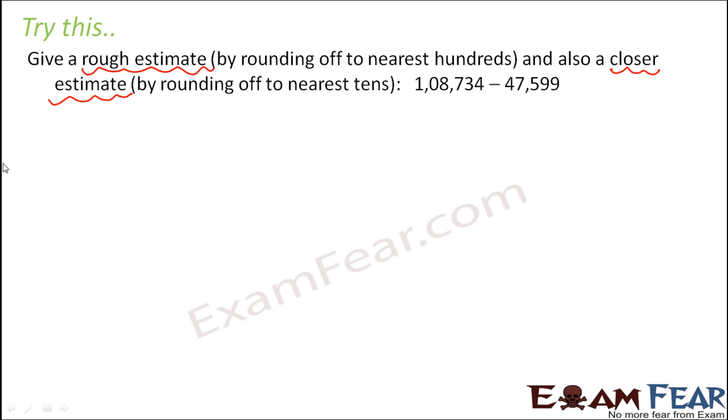So let us try this. Let us first try to find out the rough estimate. So for the rough estimate, we have to round it off to the nearest hundreds. So this is the hundreds place. So 1,08,734 would lie between 1,08,700 and 1,08,800. So it is more close to 1,08,700.